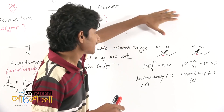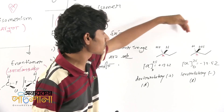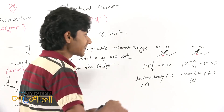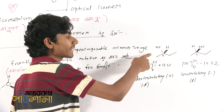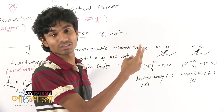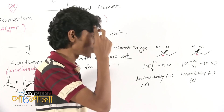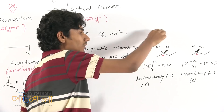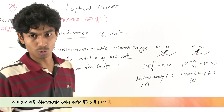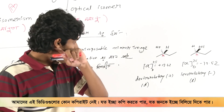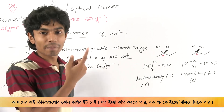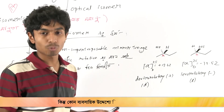That means the specific rotation is 3 degrees, and the mirror image is more visible. Because light has interaction, the interaction is more visible. The enantiomeric pair is more visible.